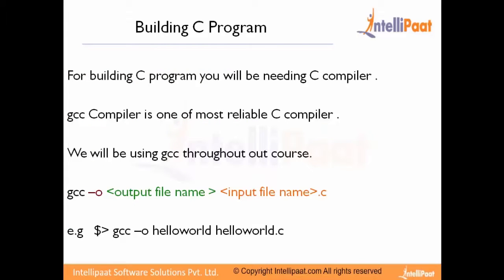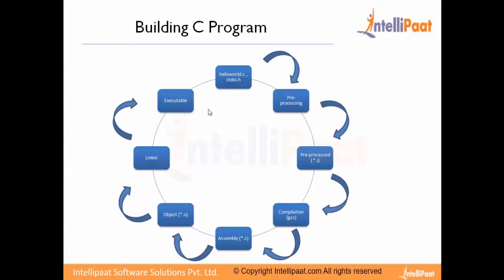Now we will understand how to build a C program. For building a C program you need a C compiler. Throughout this lecture series we will be using the GCC compiler, which is a well-known open-source and very powerful compiler. To compile your C file you use the command: gcc -o output_file_name input_file_name. For example: gcc -o hello_world hello_world.c — where hello_world.c is the file containing your program, and the output file is generated after compilation. The output file could be hello_world.exe or hello_world.o depending on which platform you are running the command.